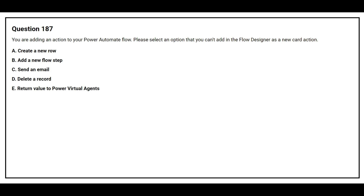Please select the option that you can't add in the flow designer as a new card action. Option A: Create a new row. Option B: Add a new flow step. Option C: Send an email. Option D: Delete a record. Option E: Return value to Power Virtual Agents.